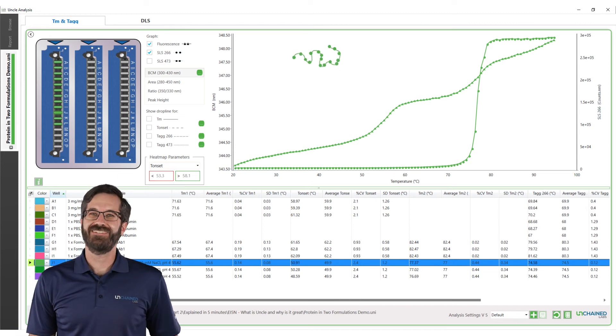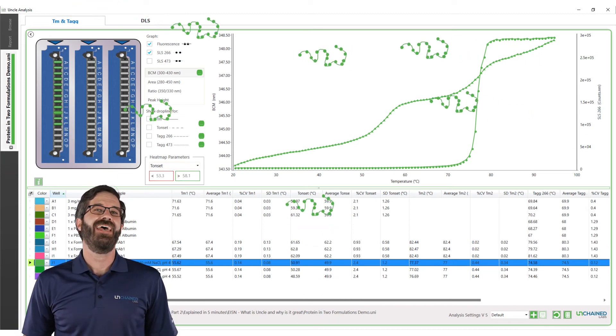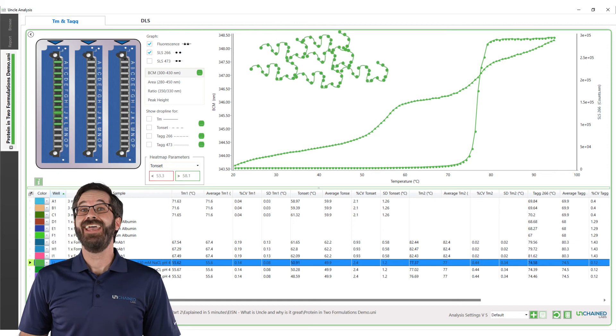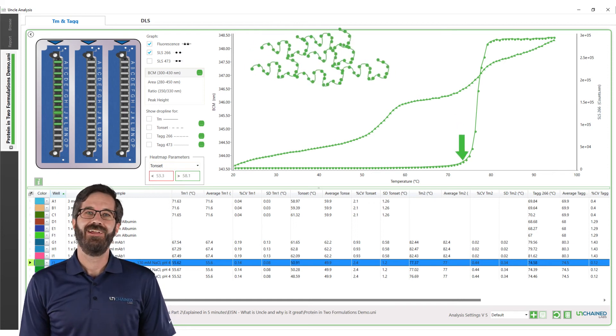If we add SLS data to our fluorescence data, we can see when proteins start to aggregate, called a TAG, and indicated by a green arrow.